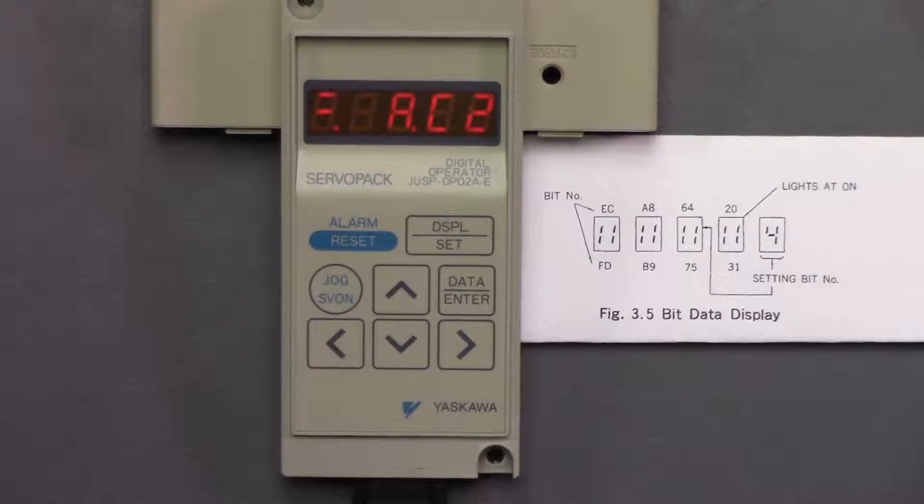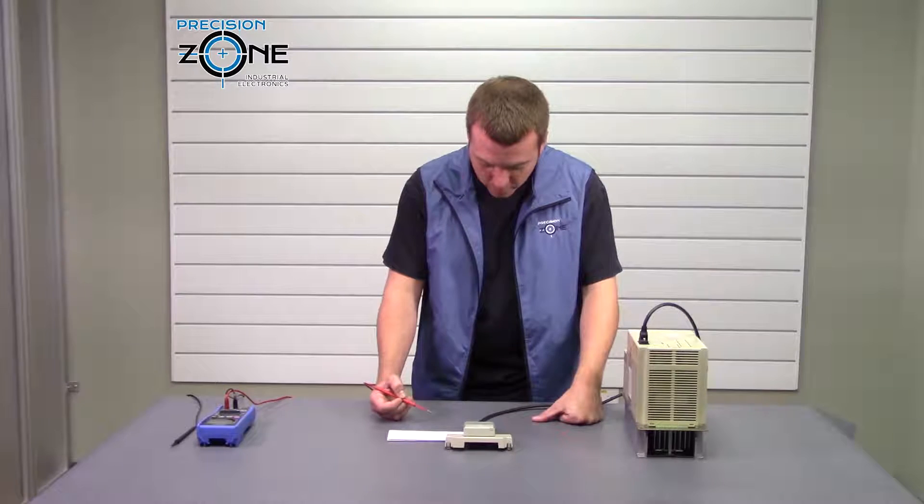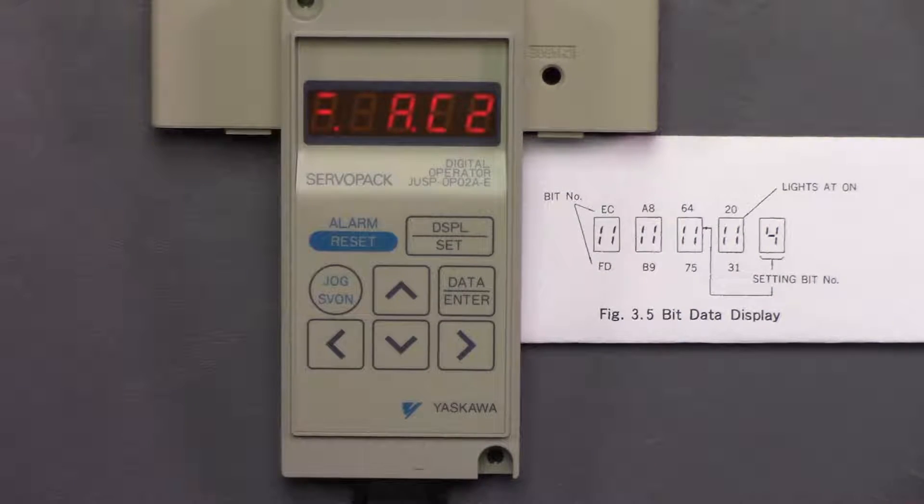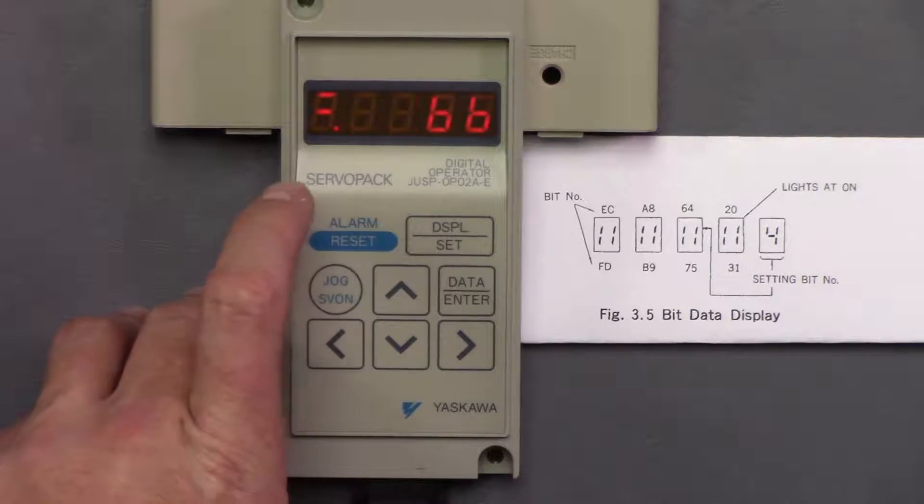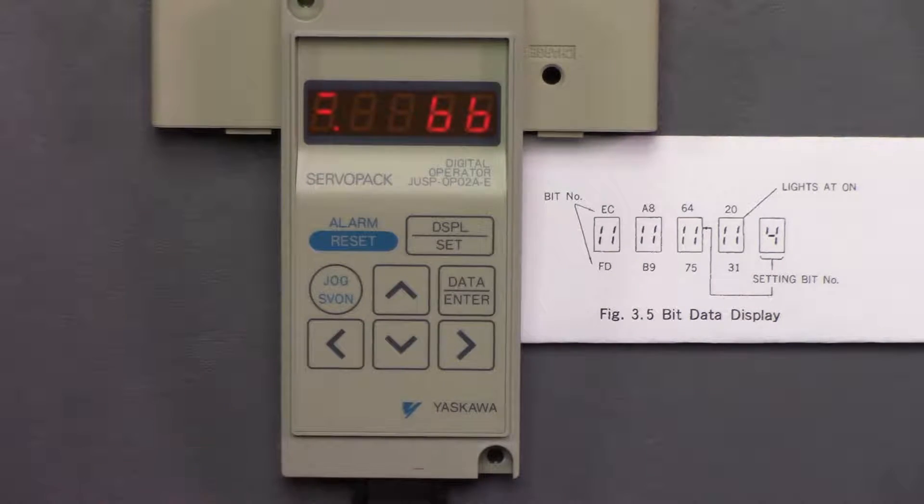Okay, so when we power on the drive, we're going to get an AC2 alarm. From the previous video, we can reset that alarm by pressing the alarm reset. Now we're going to go to our status mode.